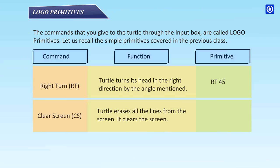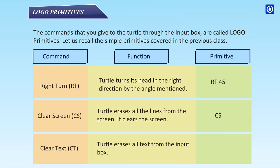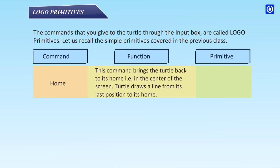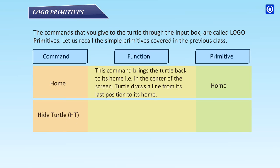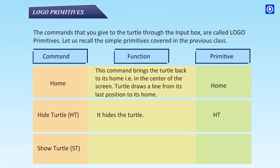Clear Screen (CS): turtle erases all the lines from the screen. Clear Text (CT): turtle erases all text from the input box. Home: this command brings the turtle back to the center of the screen, drawing a line from its last position to home. Hide Turtle (HT): hides the turtle. Show Turtle (ST): brings the disappeared turtle back to the screen.